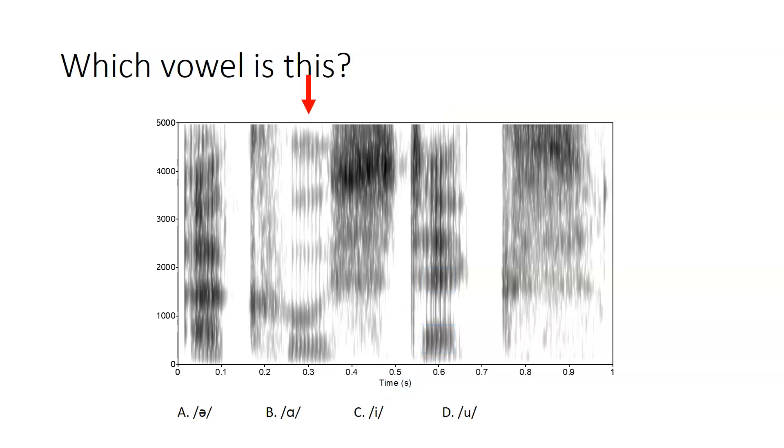This vowel, on the other hand, has F1 and F2 quite close to each other, and also quite low. So among our corner vowels, we would expect that low F1 to be associated with a high vowel, but that low F2 to be associated with a back vowel. So we would expect that to be /u/.